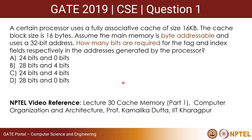Hello all. Today we will be looking at a question given in GATE 2019. A certain processor uses a fully associative cache of size 16 KB. The cache block size is 16 bytes. Assume the main memory is byte addressable and uses a 32-bit address. How many bits are required for the tag and index fields respectively in the addresses generated by the processor? The NPTEL video reference is Lecture 30 on Cache Memory Part 1, from the course Computer Organization and Architecture by Professor Kamalika Datta from IIT Kharagpur.